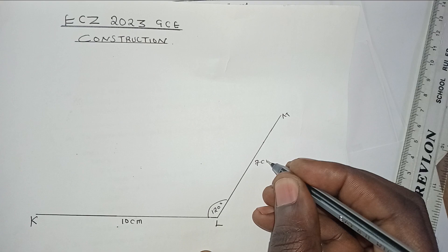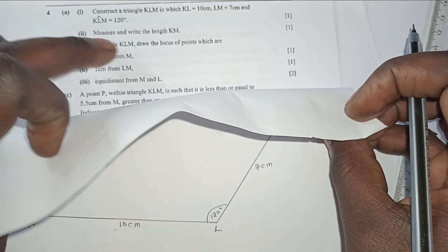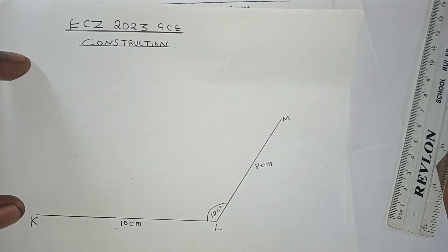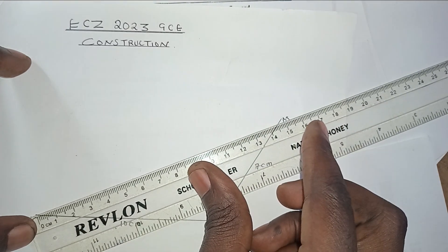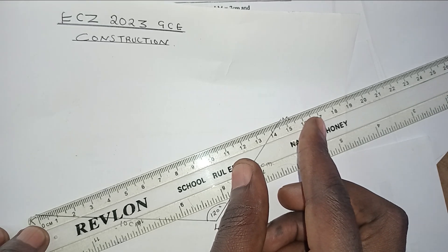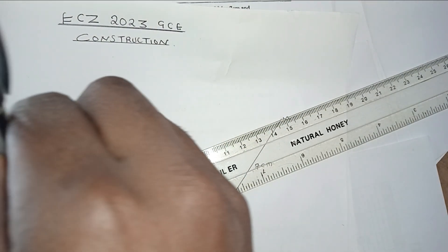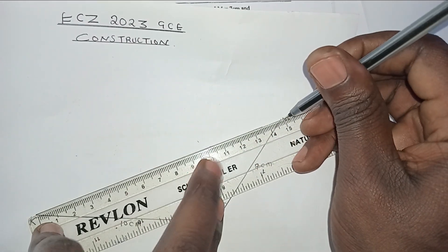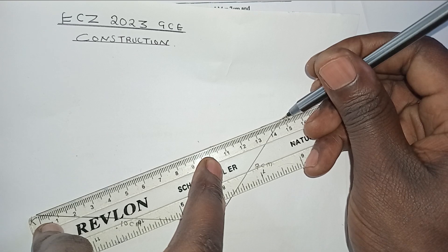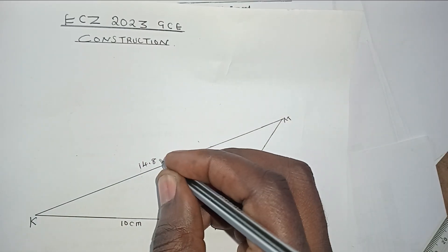Make sure LM is indicated at 7 centimeters. The next part of the question asks us to measure and write the length KM — the distance from K to M. Simply get your ruler and measure this distance, making sure it is as accurate as possible. From K to M, this distance is about 14.8 centimeters.